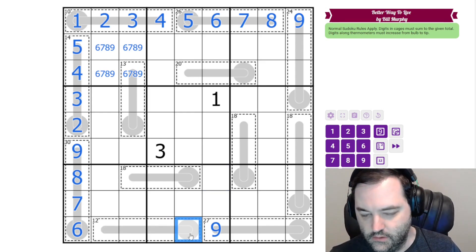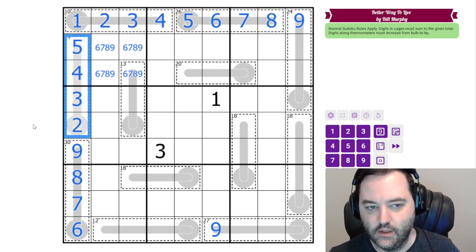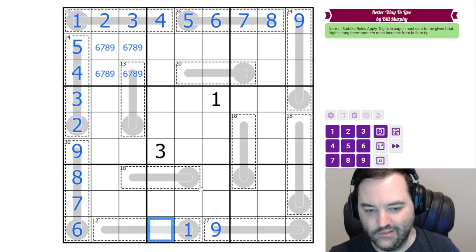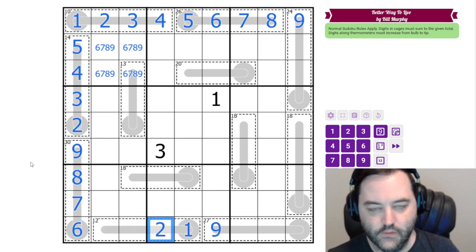For the 12 cage, what can this be? Well, if we don't have a one, the lowest we can make is two, three, four, five, which is 14. That's too big, so this is a one, and in fact, this is also a two. If we had three, four, five, that would already be 12 plus the one is 13, so that's too big, so this is a two.